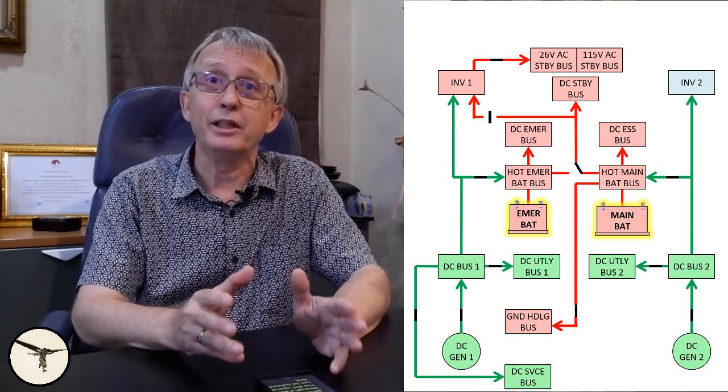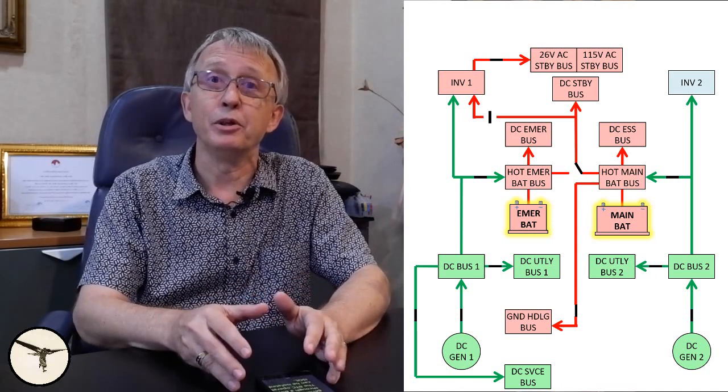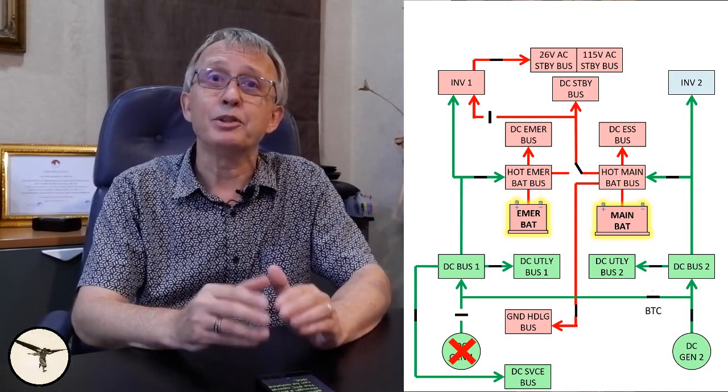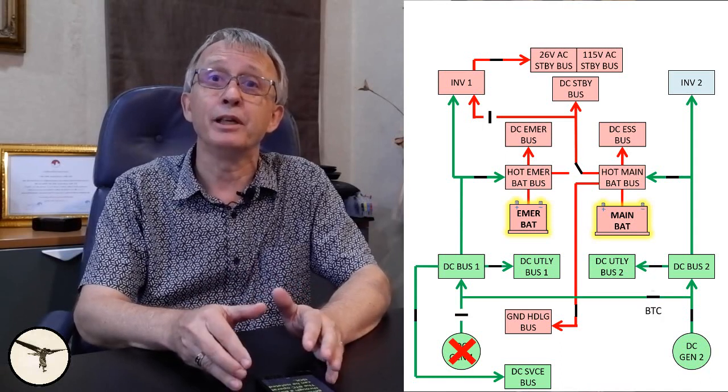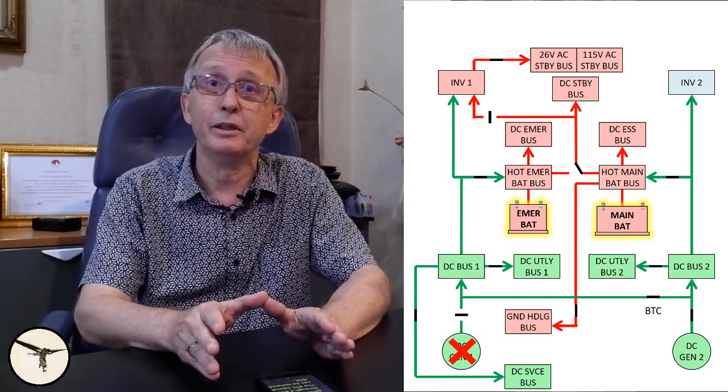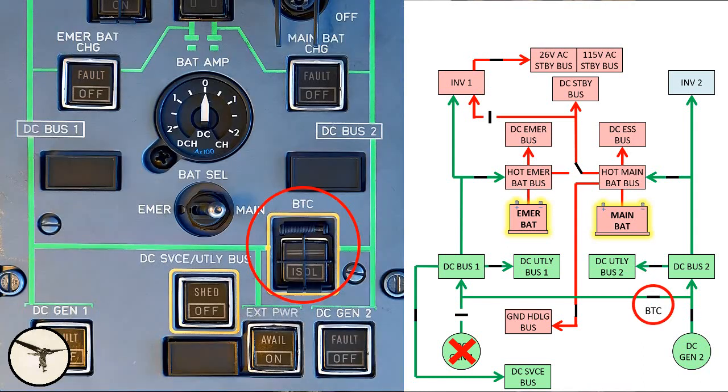As you can see, each DC generator powers their own side. In case one of the generators is offline, the other generator can power the other side through a bus tie contactor, BTC. The BTC operates automatically but can be isolated manually by selecting the push button to isolate.